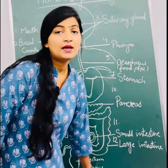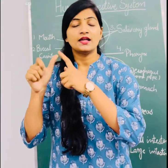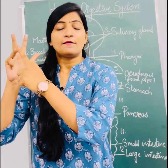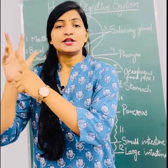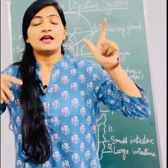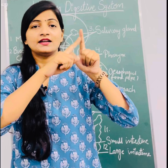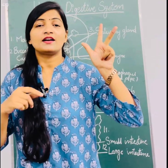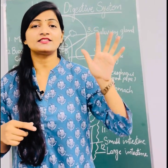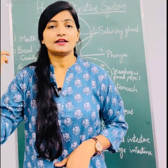So these are the 14 parts of the human digestive system: mouth, buccal cavity, salivary glands, pharynx, esophagus, diaphragm, stomach, liver, pancreas, small intestine, large intestine, and rectum.